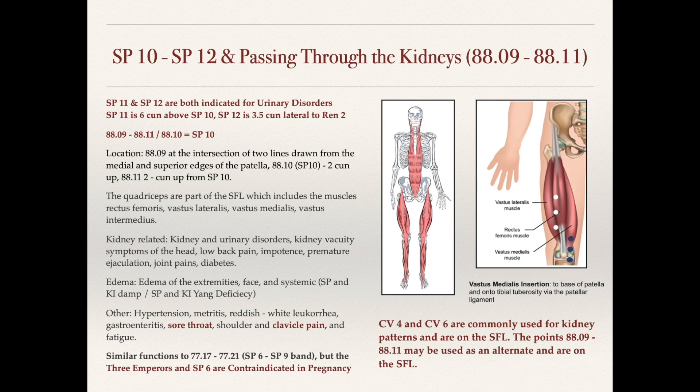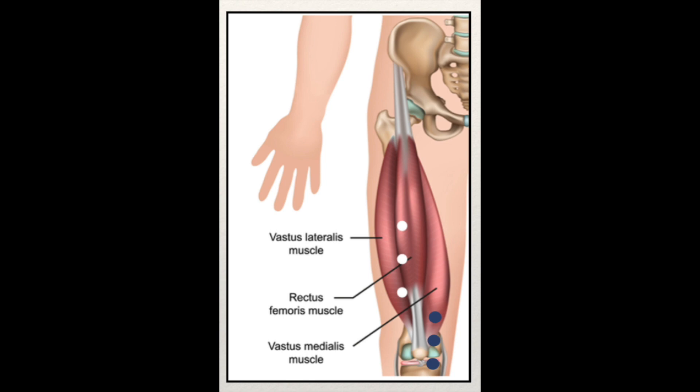Two sun above 88.10 is 88.11. In the diagram on the right side, I've put these points in blue, and the points in white are the four horses. This isn't quite to scale, but you get the point. So we have these three passing through kidney points on the spleen line, one of them overlapping with spleen 10, one two sun proximal, and one two sun distal.